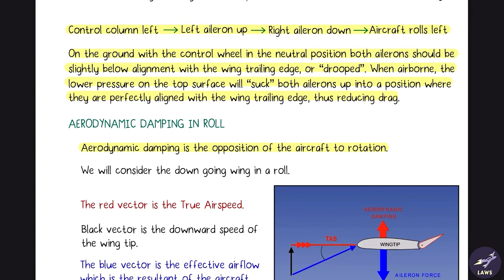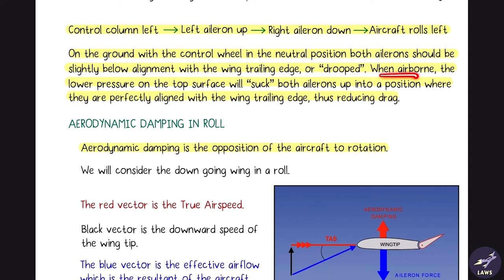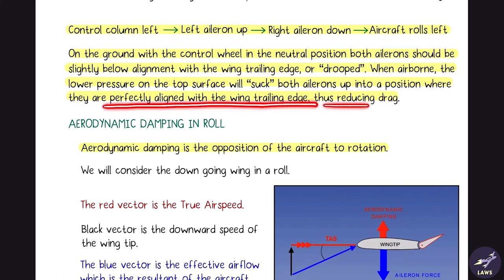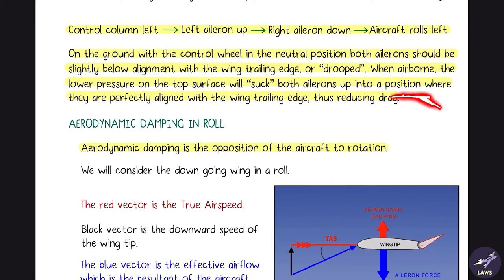On the ground with the control wheel in the neutral position, both ailerons should be slightly below alignment with the wing trailing edge — they should be drooped. When airborne, the low pressure on the top surface will suck both ailerons up so they are perfectly aligned with the wing trailing edge, reducing drag.